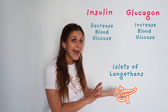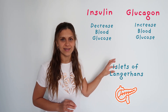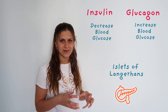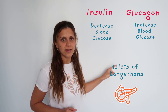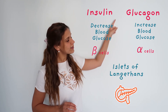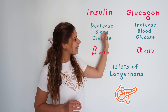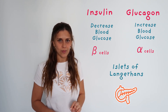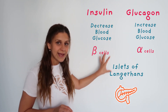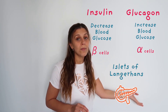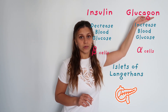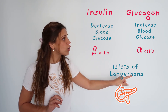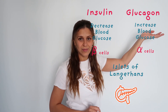The pancreas has what are called islets of Langerhans, which are basically a cluster of cells. These islets of Langerhans have beta cells, which produce insulin, and they also have alpha cells, which produce glucagon. So to recap: insulin brings down the blood glucose; glucagon brings up the blood glucose. Insulin will remove sugars from the blood; glucagon will push sugars into the blood.